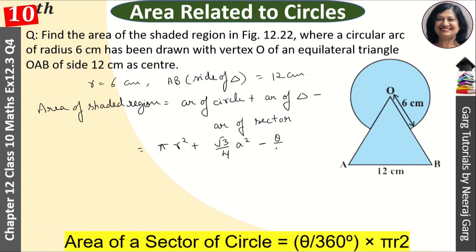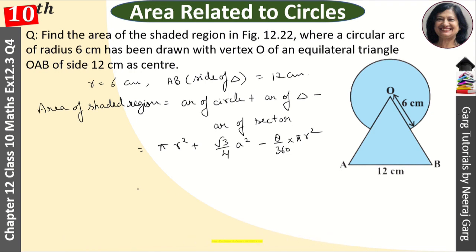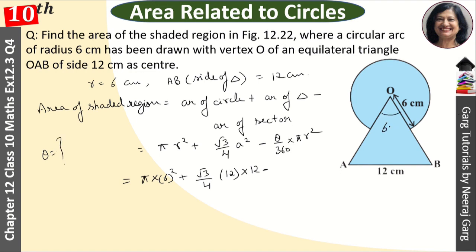The formula is theta upon 360 into pi r squared. So, putting the values: pi with r equal to 6, so it is 6 squared; plus root 3 upon 4, side is 12, so 12 into 12; minus theta. What will theta be? The angle of the equilateral triangle is 60 degrees.